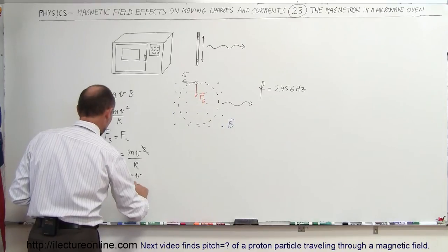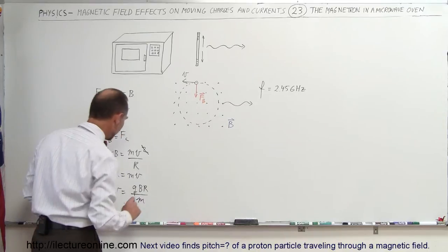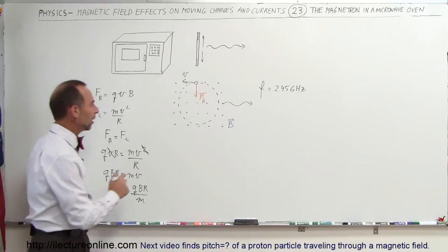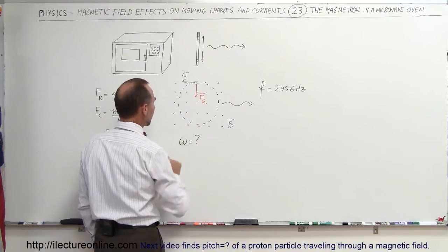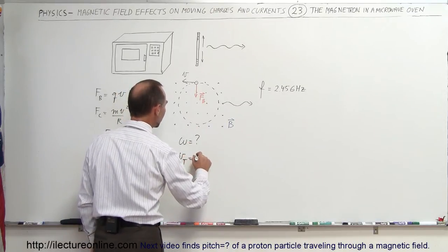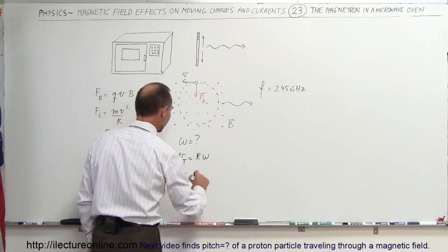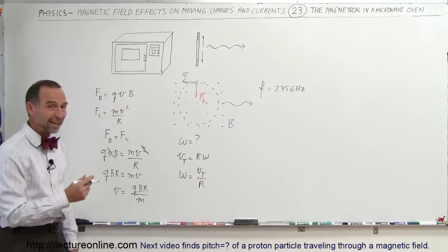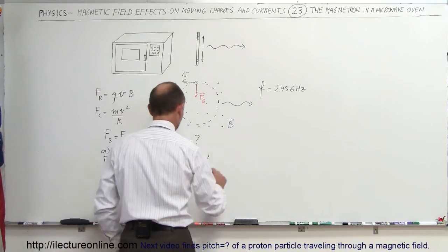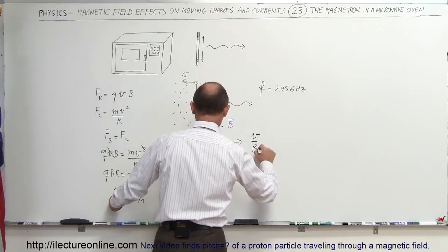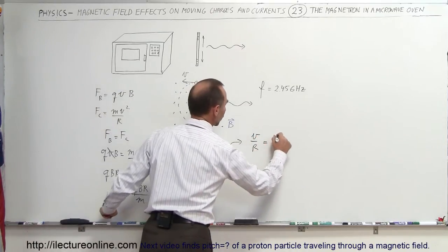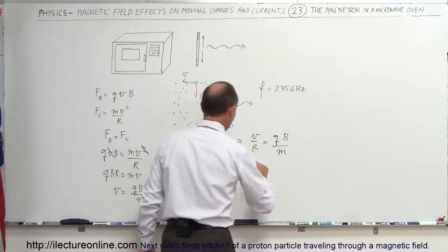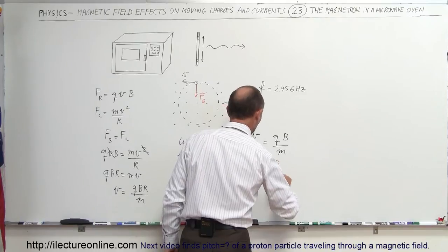Now, when particles are moving in circular paths, we can also calculate the angular velocity. The angular velocity is equal to, well, we know that the tangential velocity is equal to R times the angular velocity, or angular velocity is equal to the tangential velocity divided by R. And of course the tangential velocity is this velocity right here. So V divided by R is actually the angular frequency. So when we put these two equations together, we could then say that V over R, by moving the R down here, is equal to QB over M. And of course V over R is equal to the angular frequency, so we have omega is equal to QB over M.